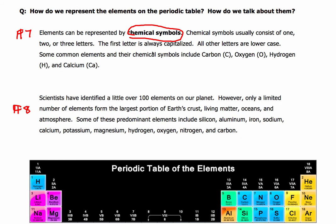Some common elements and their chemical symbols include carbon, oxygen, hydrogen, and calcium. For example, helium has two letters: the first letter is an uppercase H and the second letter is a lowercase e. The same is true of neon - the first letter is capitalized, the second letter is not.